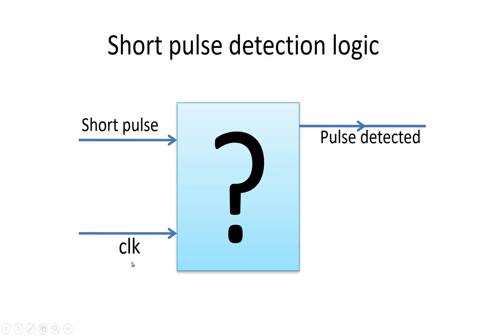Now, as soon as this short pulse is detected by this unknown module, it should give its output high for one clock cycle. Let us name this output signal as pulse detected.